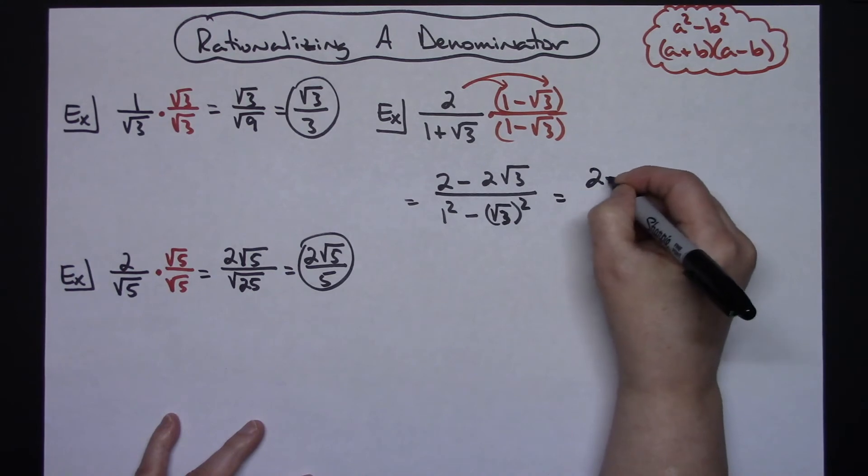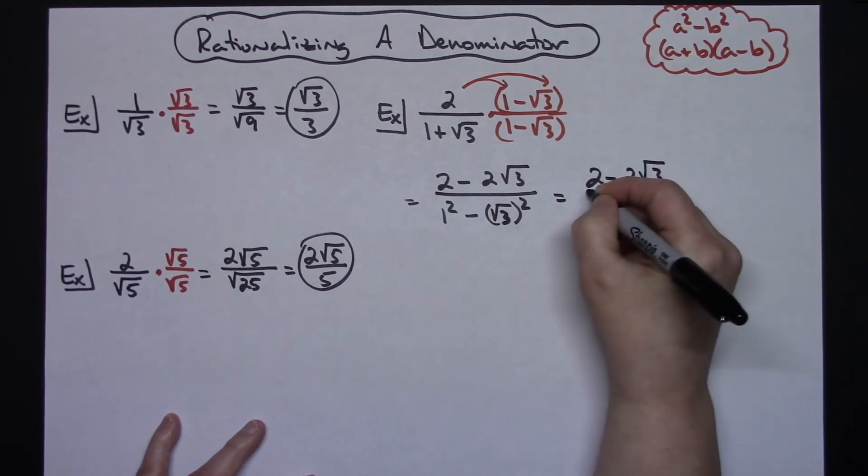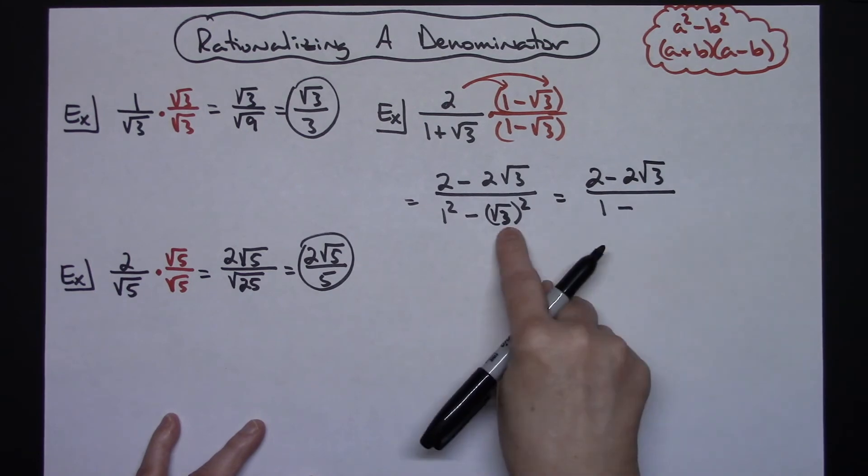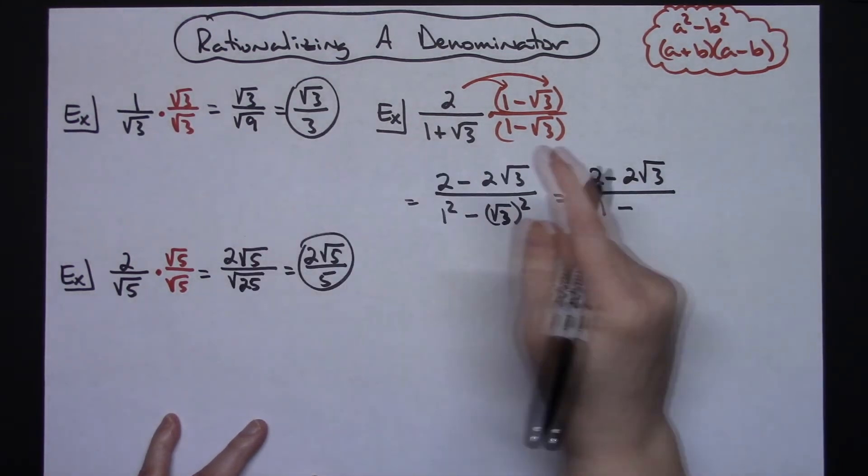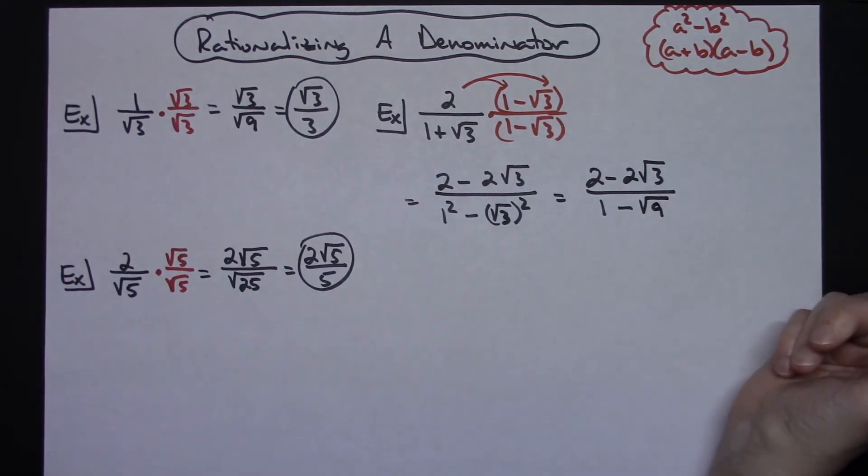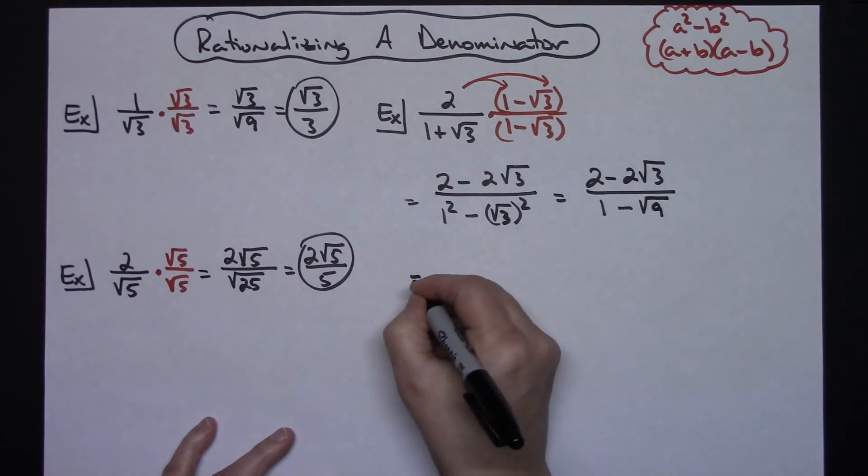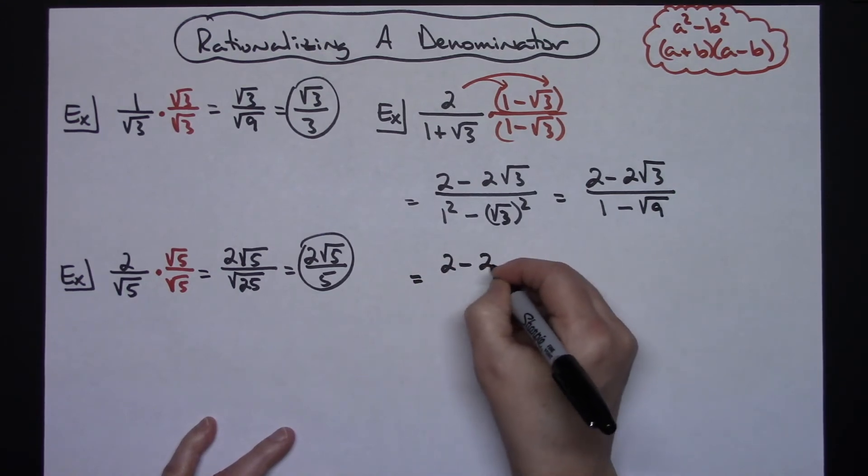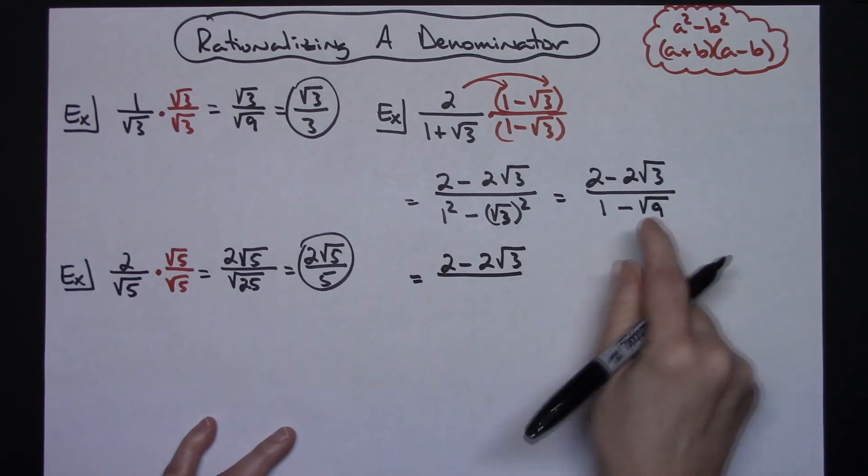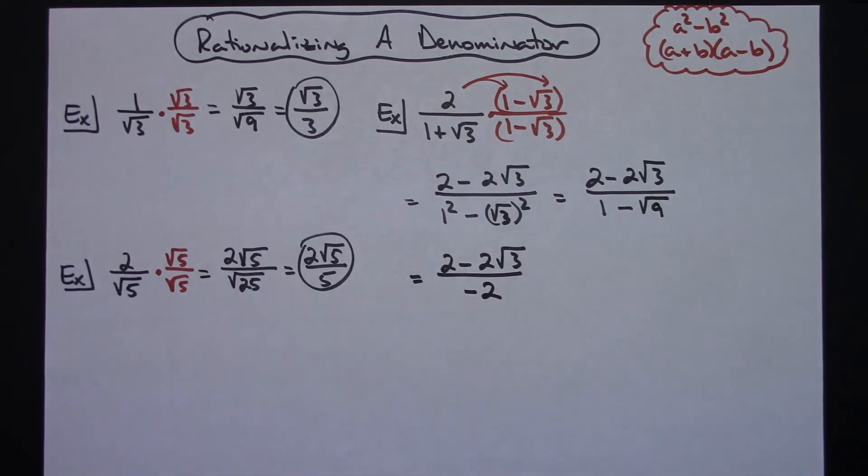So my top is going to be 2 minus 2 square root of 3. The bottom, 1 squared is just going to be 1. This will be square root of 3 times square root of 3, which we know is square root of 9 because we did it over here. And we know square root of 9 is 3, so let's keep going here. I'll have a 2 minus a 2 square root of 3 in the top, and then 1 minus 3. 1 minus 3 is going to give me a negative 2 in the bottom.